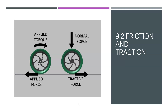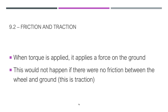Normal force and traction are two key forces here, and torque comes into play as well. Normal acts perpendicular to the surface the wheel is in contact with. Traction acts between the wheel and the surface. When we apply torque with a wheel, it applies that force to the ground — but this won't happen unless there is friction between the wheel and the ground. There would be no torque without friction, because without friction there would be no traction, and the wheel wouldn't move the object.